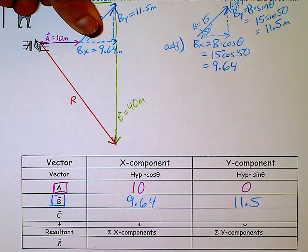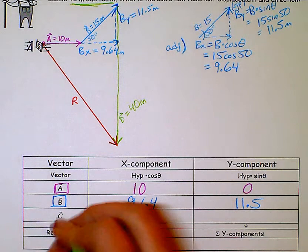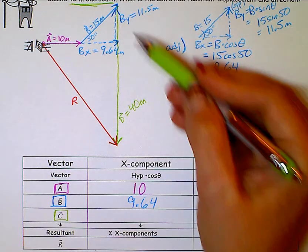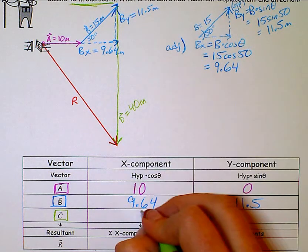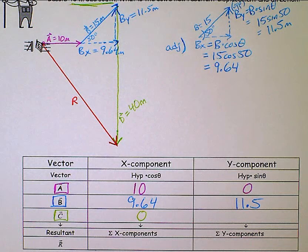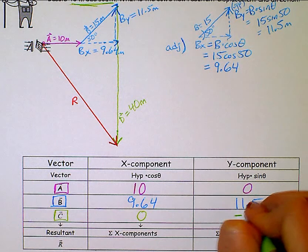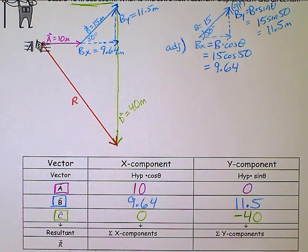And then last, I've got my C vector, the green one. And it's only vertical, so it has no x component. And it is down in the y direction by 40, so it's negative 40. Because it's down. Right?